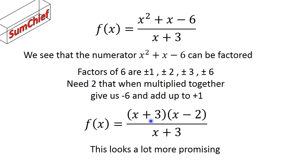We're going to now rewrite this function as f of x equals x plus 3 times x minus 2 divided by x plus 3. Now, this looks a lot more promising. Let's move on.